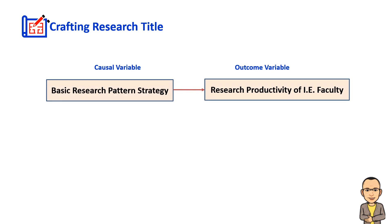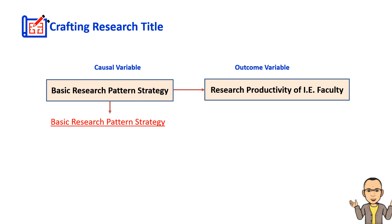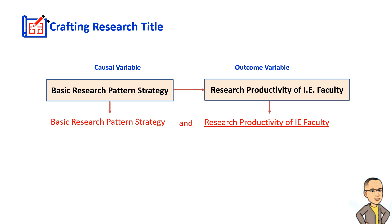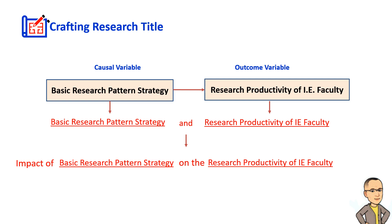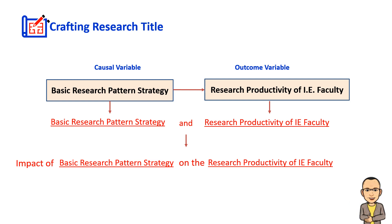After establishing the two variables, a research title can be crafted by combining the causal variable and the outcome variable adjoined by the conjunction 'and' — that is, 'Basic Research Pattern Strategy and Research Productivity of Institute of Education Faculty.' The title can also be lengthened by adding 'Impact of' or 'Effects of' before the causal variable and 'on the' before the outcome variable. Hence, the new title: 'Impact of Basic Research Pattern Strategy on the Research Productivity of IE Faculty.' As a disclaimer, there are other ways of constructing a title. For instance, qualitative and descriptive research may not have a subordinate or dependent variable, so this pattern may not apply.